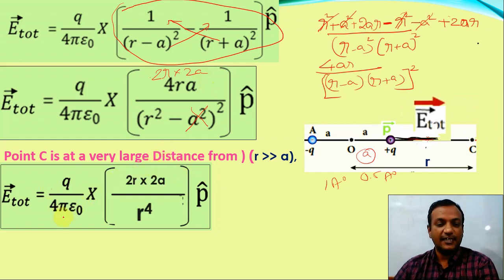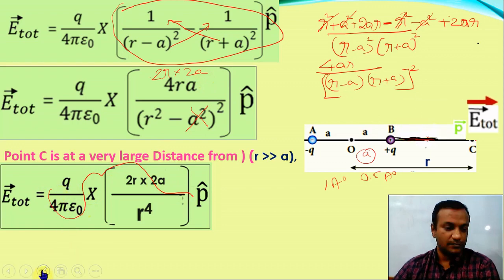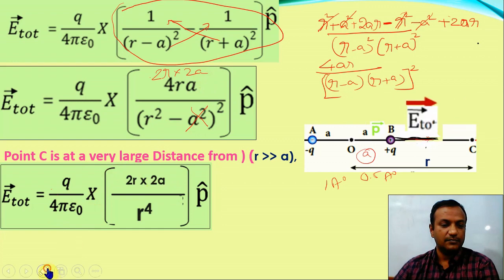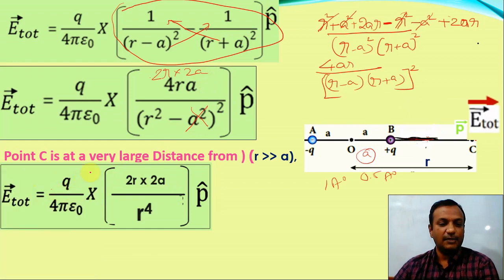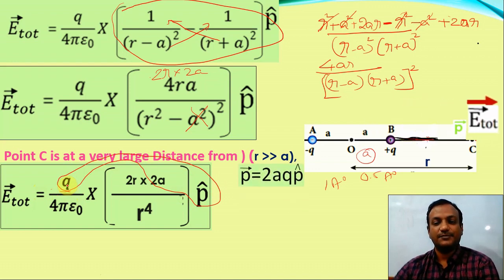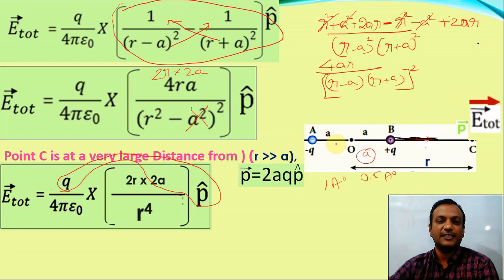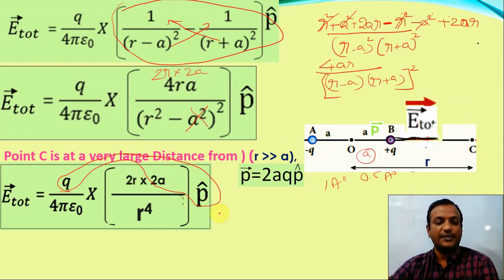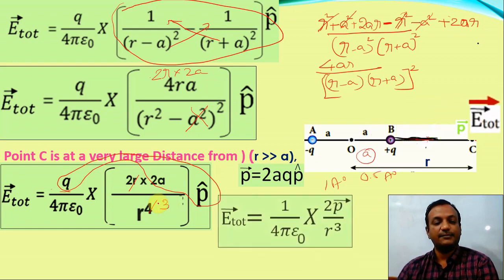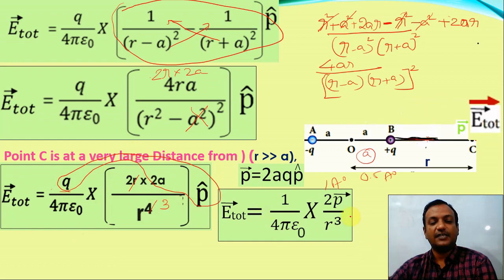So the total electric field E total equals 1 by 4πε₀ into q times 2a into P-cap, divided by r³. Now, q times 2a is the dipole moment, which is a physical quantity. Substituting 2aq as the P-vector, we get E total equals 1 by 4πε₀ into 2P-vector by r³.